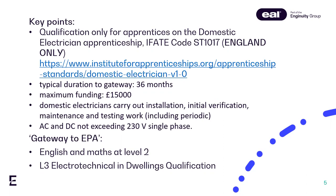As you are aware, domestic electricians work in dwellings including homes or individual units, which can encompass care homes, apartment buildings and student accommodation. They do not work in communal areas, buildings, or commercial or industrial building sites. Another demarcation from the existing installation and maintenance electrician apprenticeship is that these apprentices and the qualification will cover single-phase installations only.